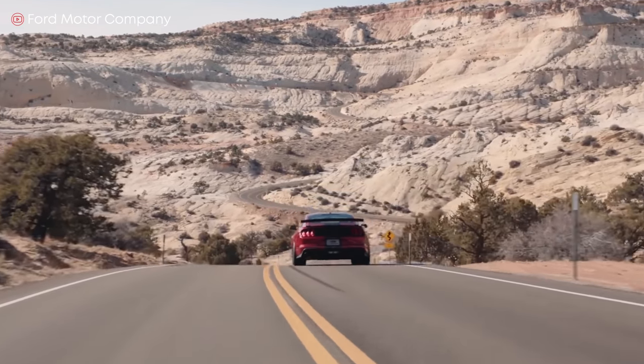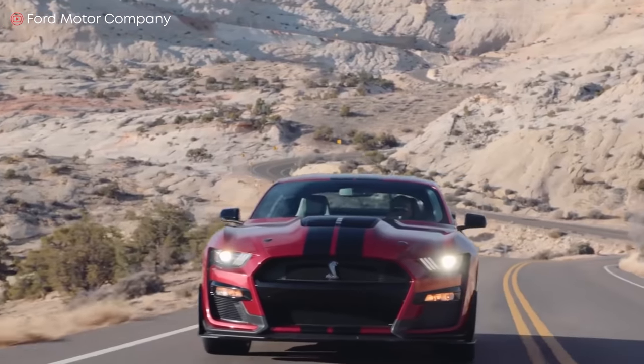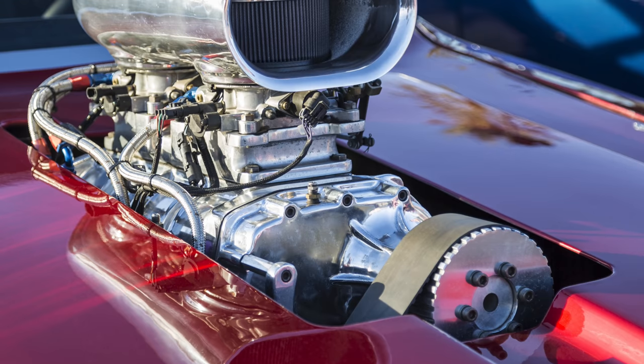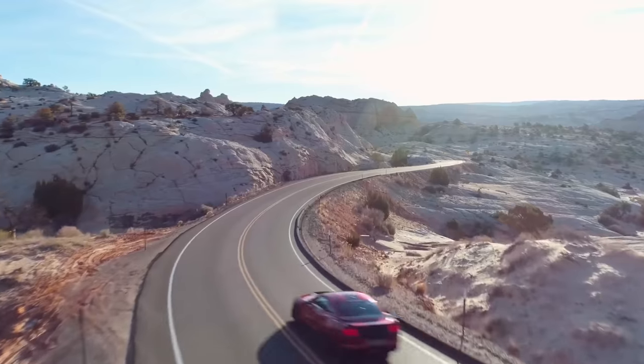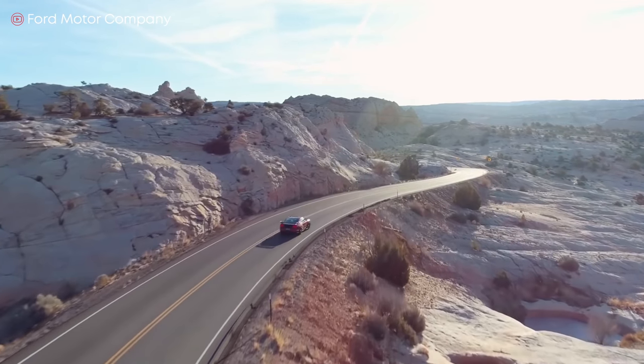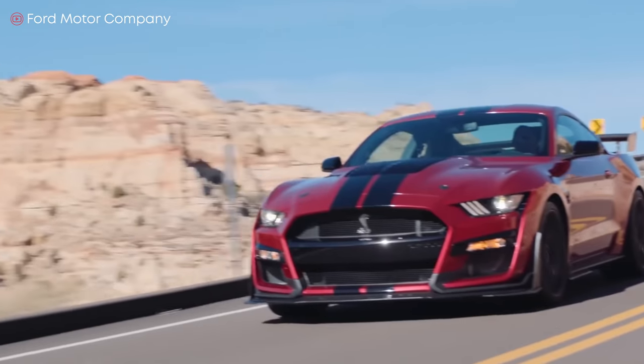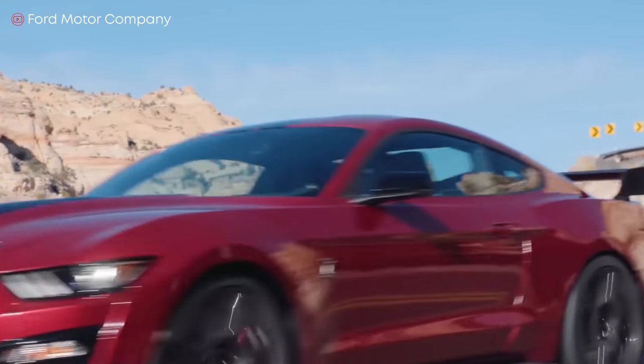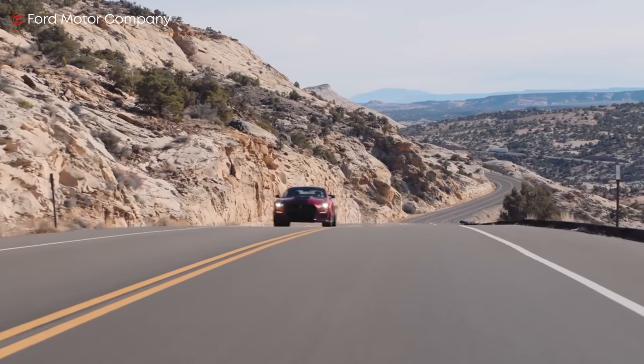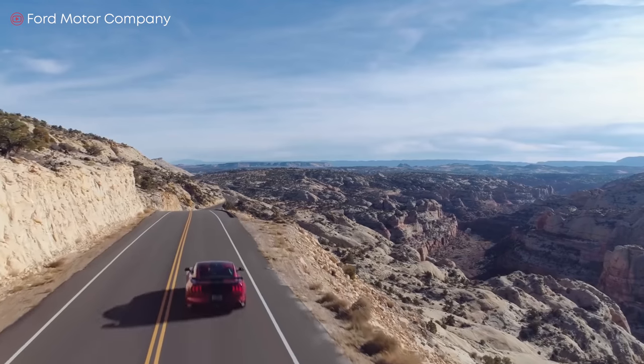Roots superchargers are popular in muscle cars and hot rods. You can see the part of the supercharger sticking out of the hood because the superchargers sit on top of the engine, but they're the least efficient of the superchargers. One reason is because they're large and add weight to the car. Also, they move air in discrete bursts rather than a continuous smooth flow.